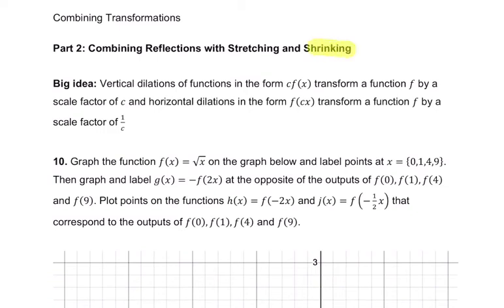So here we're on part two, and we're starting to combine reflections with stretching and shrinking. So, what's the big idea? Well, I think the biggest thing to hold on to is how these dilations work, and also that reflections and dilations kind of happen in alternating orders, and that won't impact the transformation. So you have some flexibility.